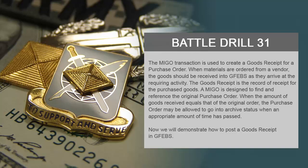MIGO is designed to find and reference the original purchase order. When the amount of goods received equals that of the original order, the purchase order may be allowed to go into archive status when an appropriate amount of time has passed.